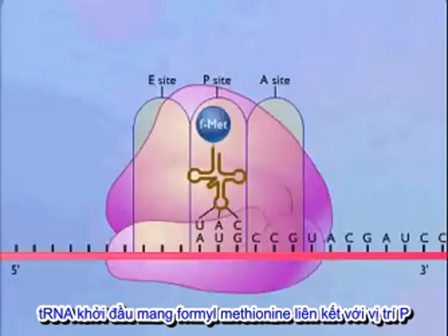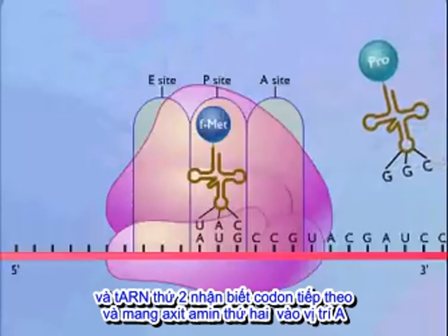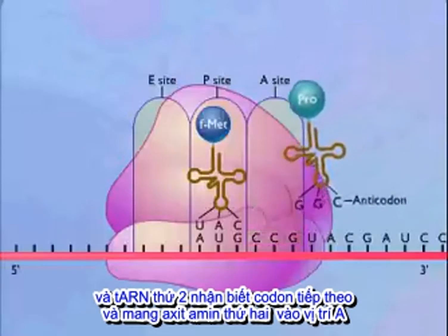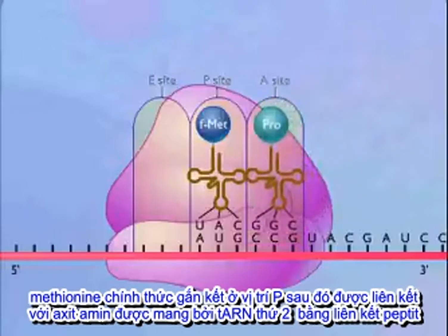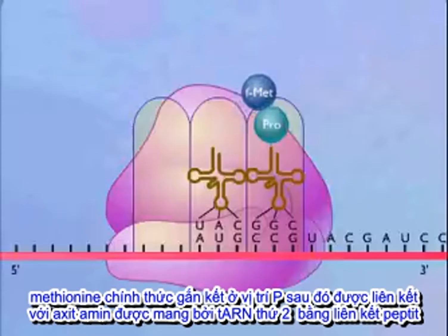The initiating transfer RNA carrying formyl methionine binds to the P-site. A transfer RNA that recognizes the next codon and carries the second amino acid then moves into the A-site. The formyl methionine carried by the transfer RNA in the P-site is then joined to the amino acid carried by the transfer RNA that just entered the A-site by a peptide bond.